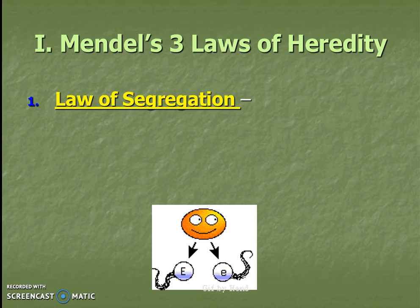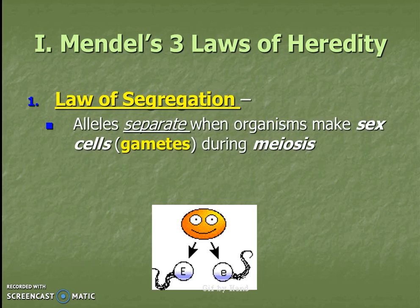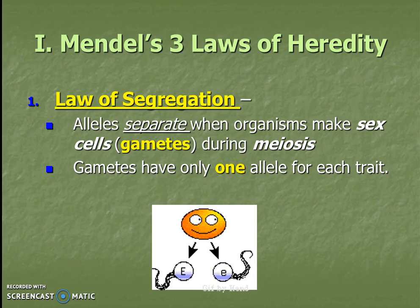The first law is the law of segregation. Alleles — the different versions of traits — when a chromosome makes its sex cells or gametes, they separate during meiosis. We know that because of how meiosis works: during metaphase and anaphase those alleles literally separate, those chromosomes separate, and the end result is that a gamete will only have one allele for each version of a trait.